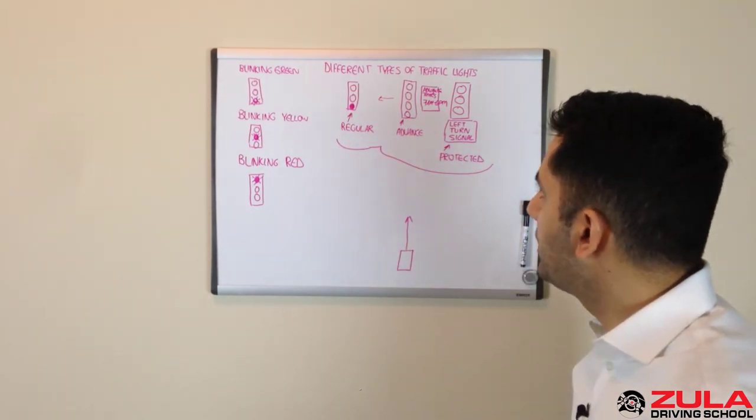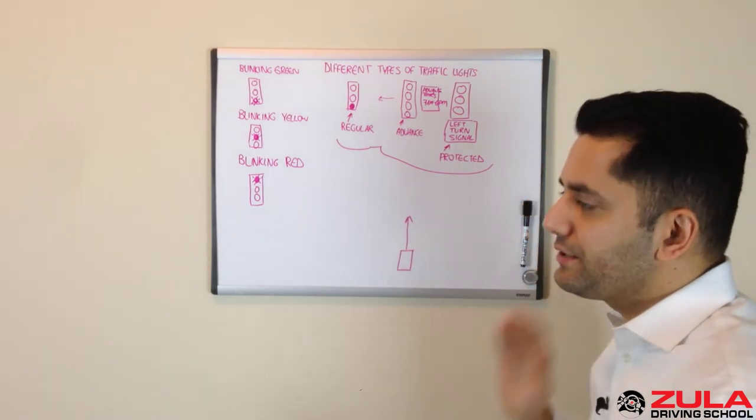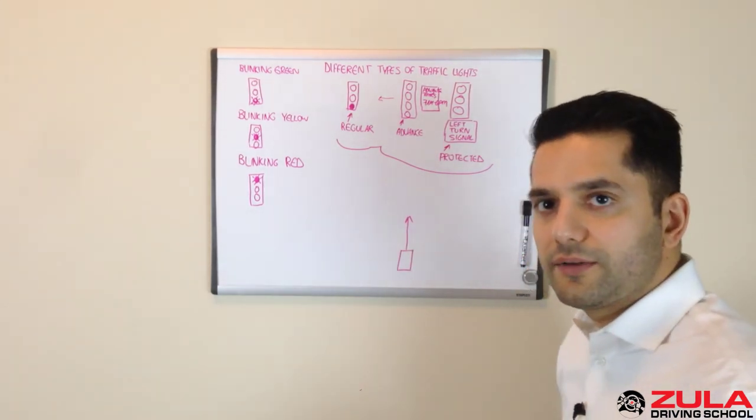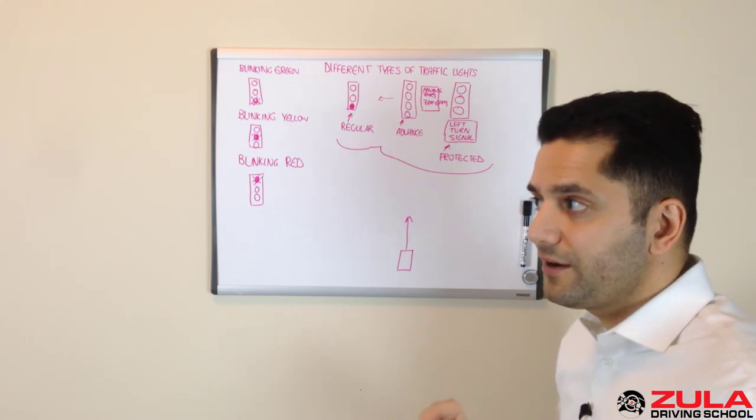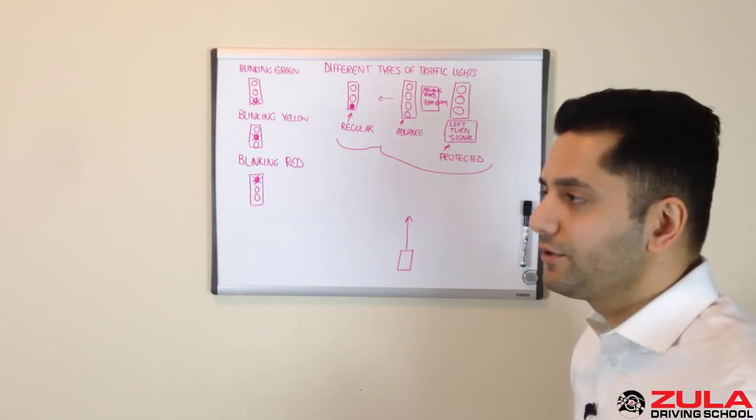So this all ties in with as you're approaching an intersection, figure out what kind of light you're dealing with so when you're there you know what the game plan is. You're not now just figuring out what am I gonna do.